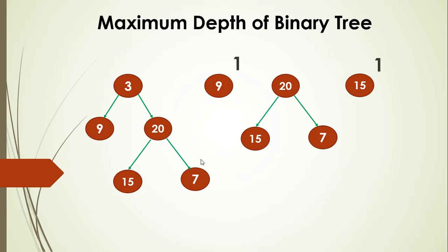Node 7 also doesn't have left or right subtrees, so its max depth is also 1 (0 plus 1). Now we have the max depth of left and right subtrees of node 20: both are 1. The maximum of 1 and 1 is 1, and adding 1 for node 20 gives a max depth of 2 for the subtree rooted at 20. Now for node 3: the left subtree max depth is 1 and the right subtree max depth is 2. The maximum of these two is 2, and adding 1 for node 3 gives 3. So the maximum depth of the binary tree with root 3 is 3.